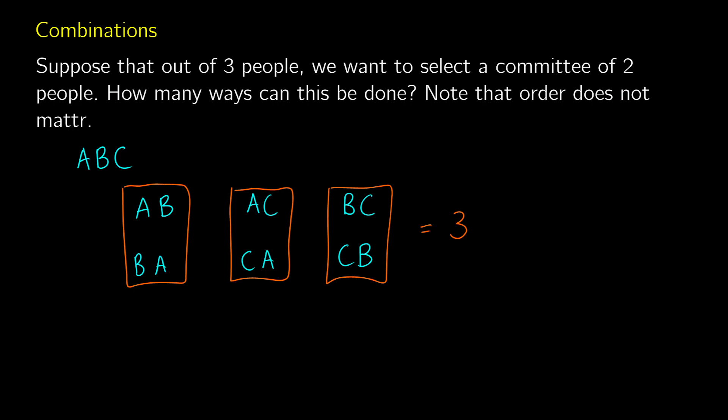So how we can figure this out is we can ask ourselves, okay, we have three factorial possible permutations. So this is the number of permutations. Now, in each permutation, there's two different ways that we can order it. So we can divide this by two factorial. So we can consider this the number of orderings per permutation.